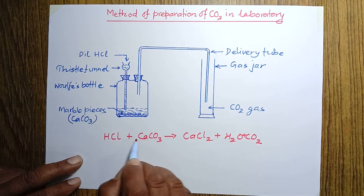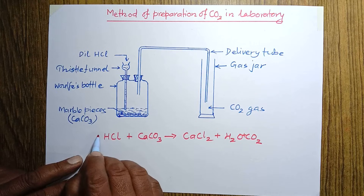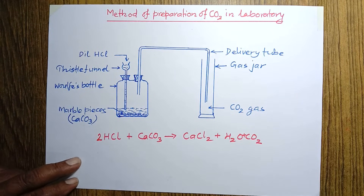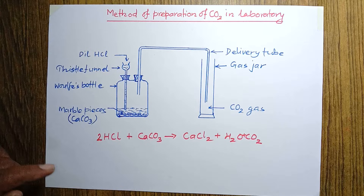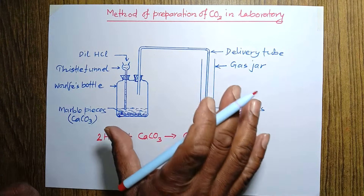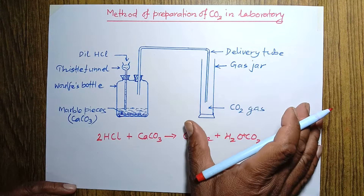Now water is H₂O, so hydrogen is two — that's why we take two here — and chlorine is two, so chlorine is balanced. This is the method of preparation of carbon dioxide gas in the laboratory.